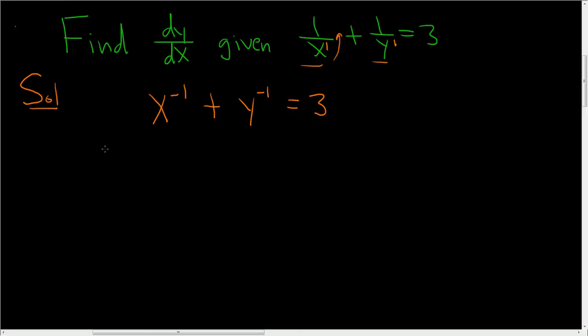Now we'll take the derivative of both sides with respect to x. So when you take the derivative here, you get negative x to the negative 2. And then when you take the derivative here, you bring the negative down, so you get negative y to the negative 2. You subtract 1 from the 1 times the derivative of the inside.